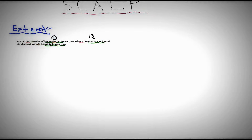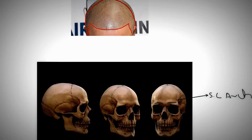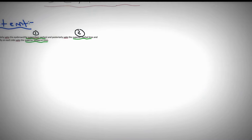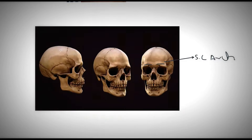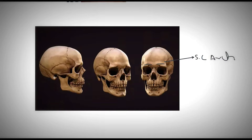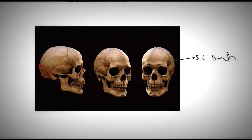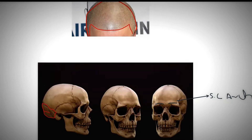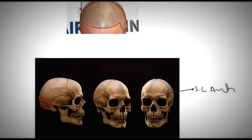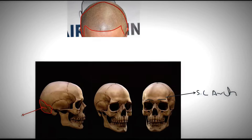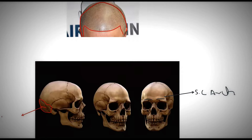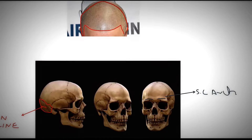At number two, posteriorly up to the superior nuchal lines. The superior nuchal lines are present on the occipital bone at the back. I'll highlight the occipital bone here in red — this is the occipital bone, and over here somewhere we have the superior nuchal lines. I'll indicate that with an arrow — this is the superior nuchal line of the occipital bone.